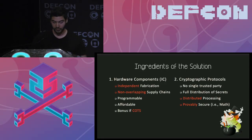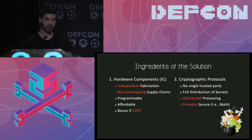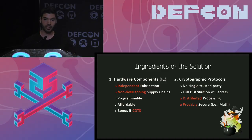We have two ingredients: hardware components and cryptographic protocols. For ICs, we need independent fabrication - they must be fabricated in different facilities with non-overlapping supply chains. They must be programmable, hopefully affordable, and commercial off-the-shelf is even better. For cryptographic protocols, we want protocols where all participating parties are not trusted, secrets are completely distributed, and operations can be performed in a distributed rather than centralized manner. They should be provably secure, meaning there are proofs that support their security.